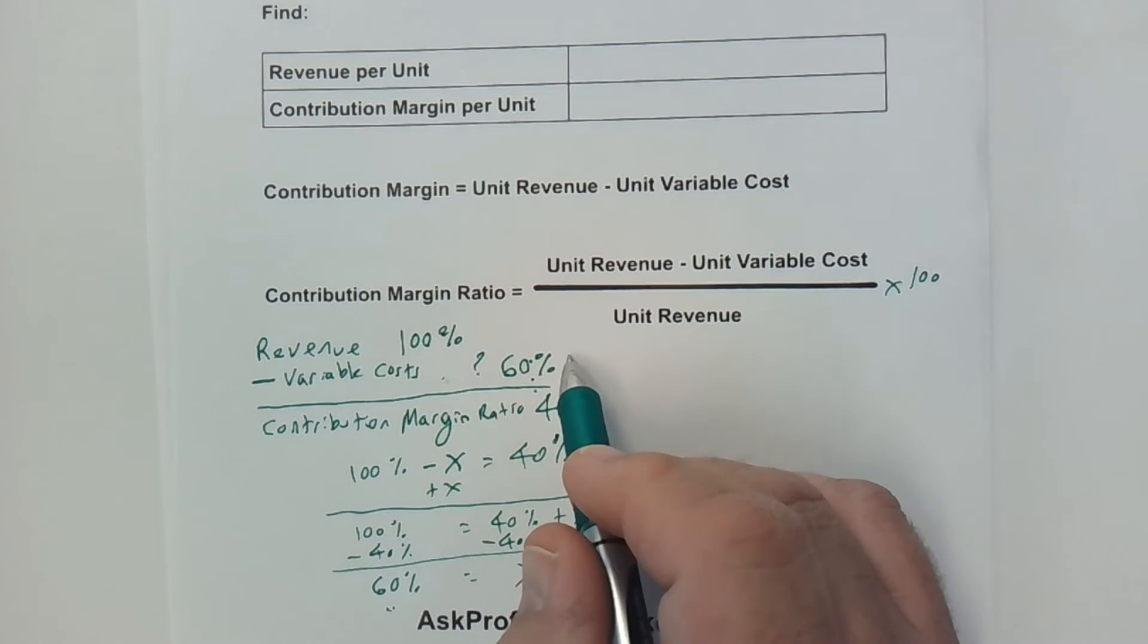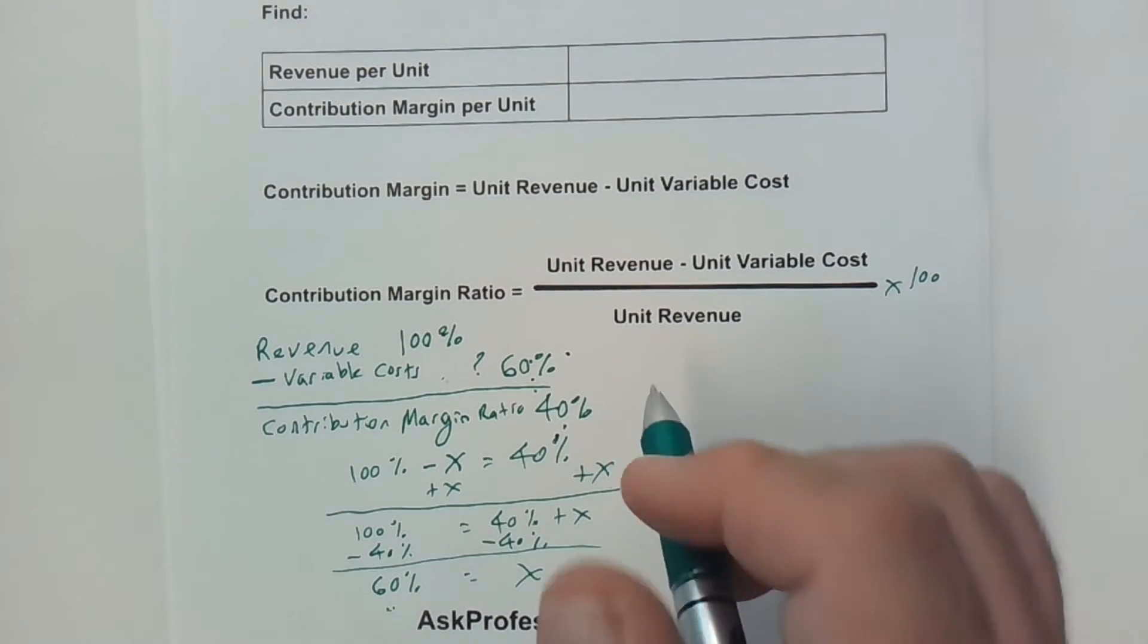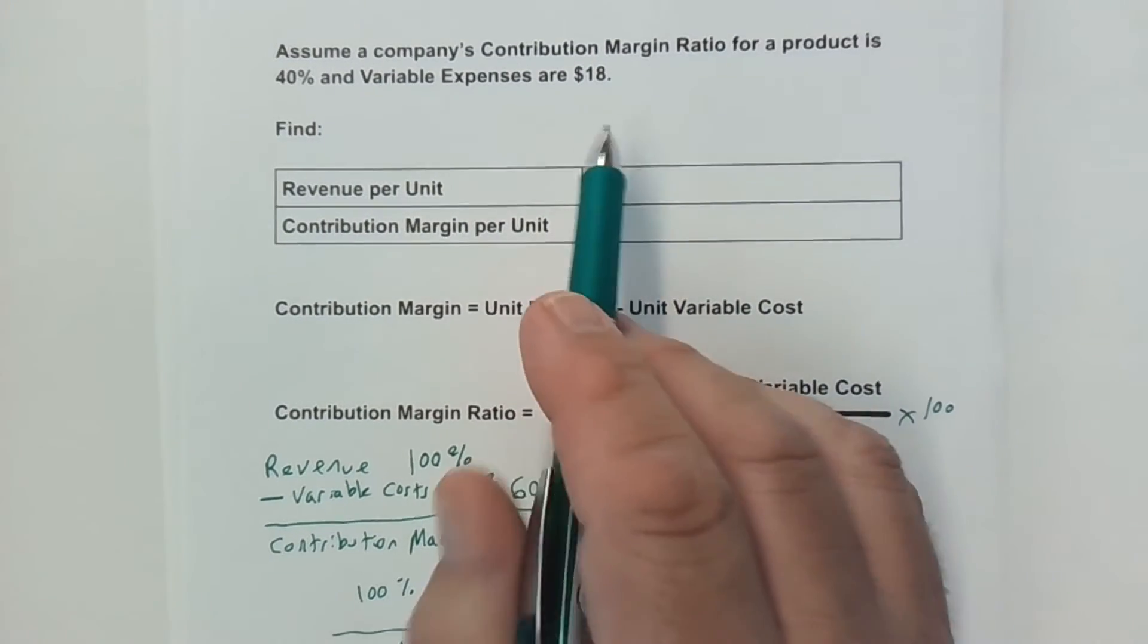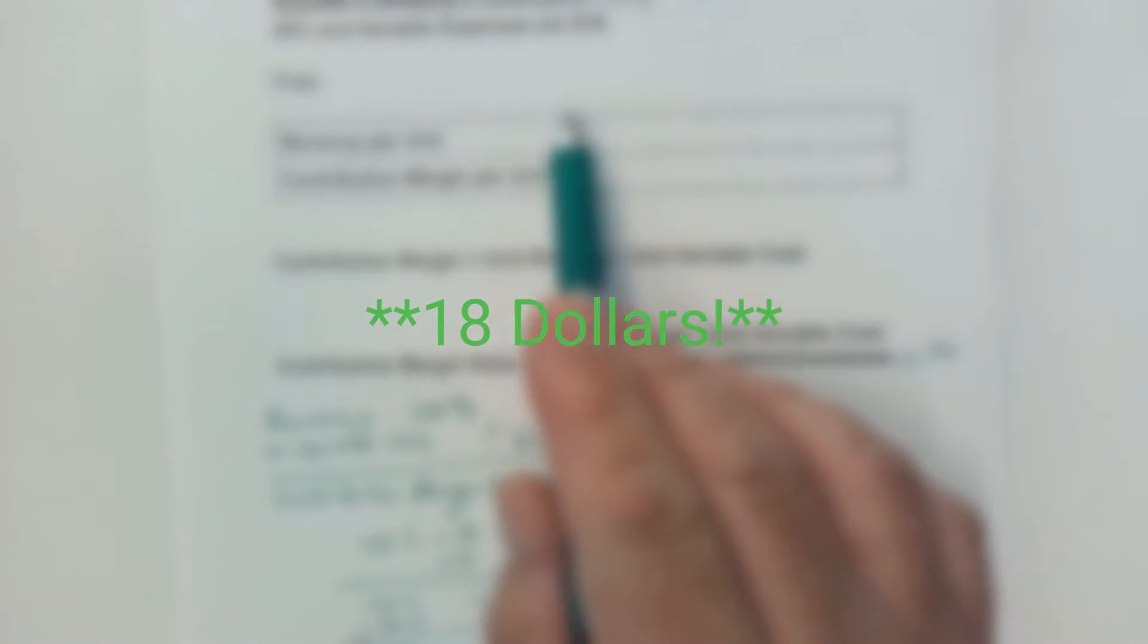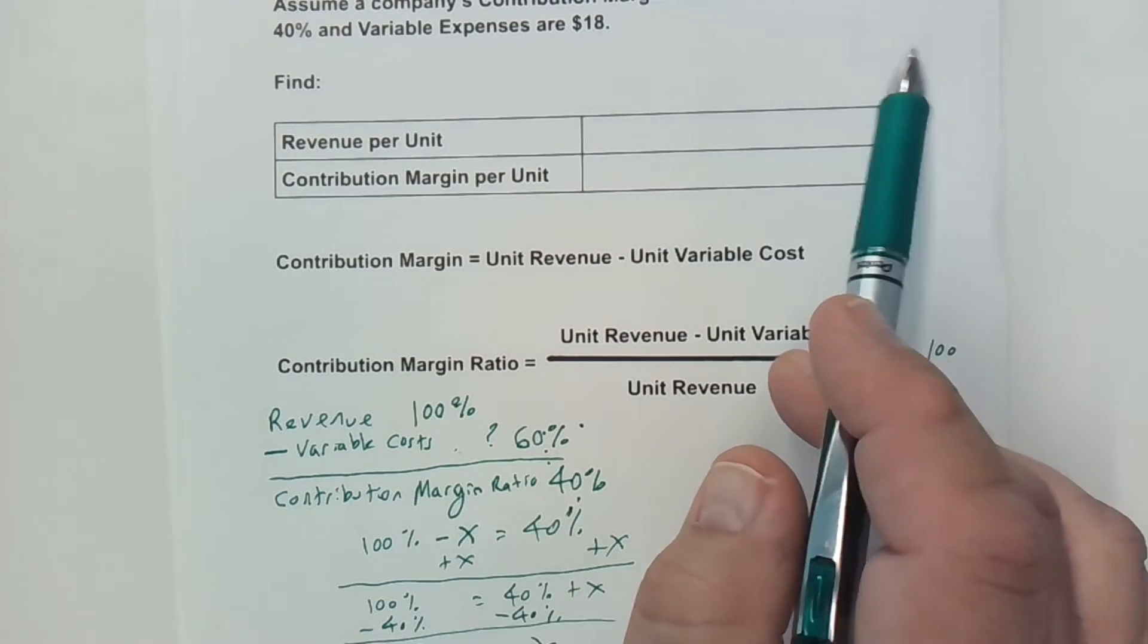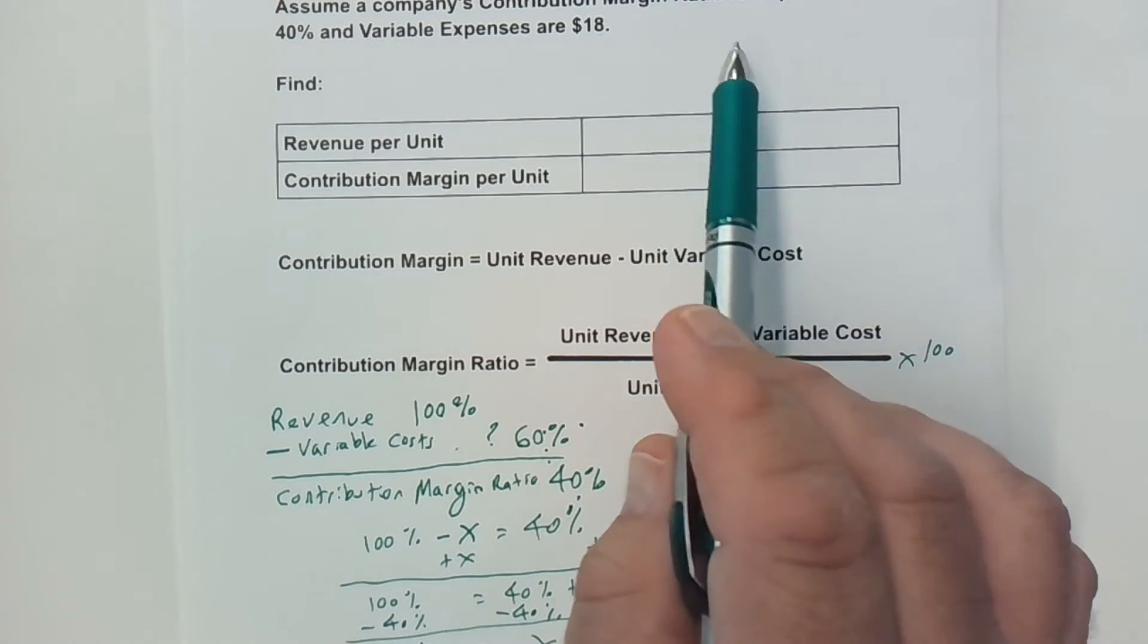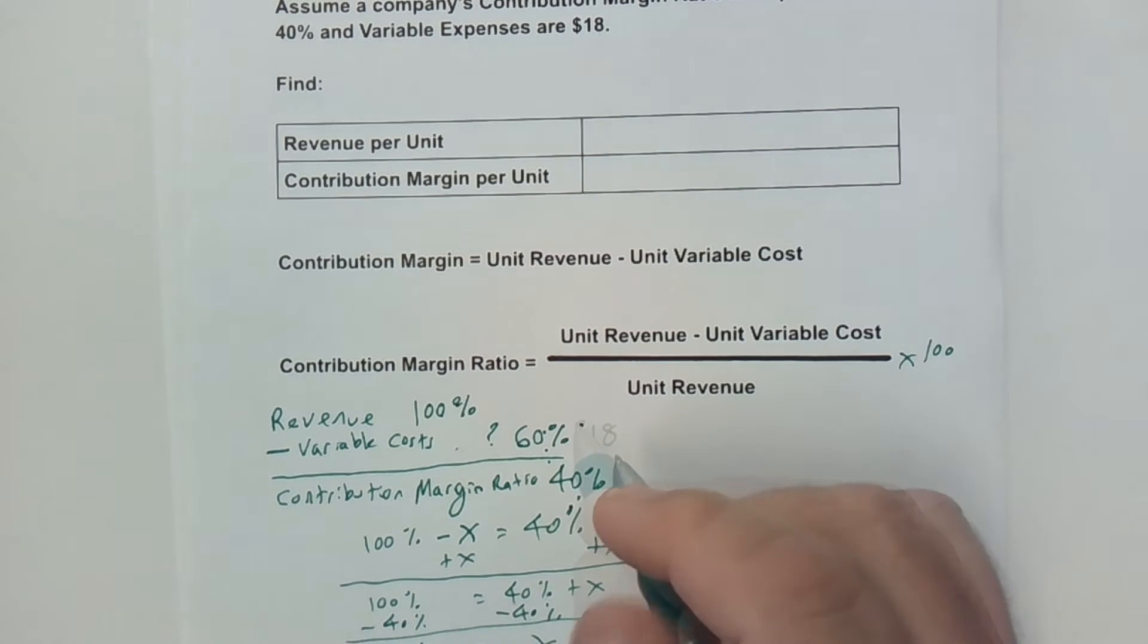So we know that the variable costs are equal to 60%. What is that in a dollar basis? Our variable costs, our variable expenses, we're told is $18. Usually a better term would be variable costs. Our variable costs are $18.